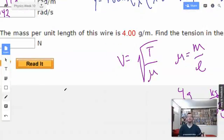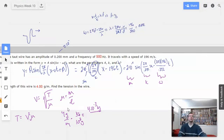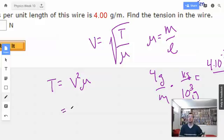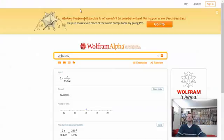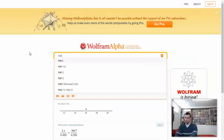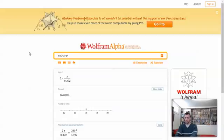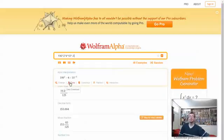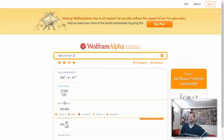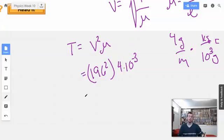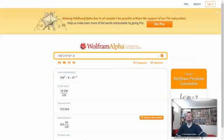Solving for tension, tension equals velocity squared times mu. So square both sides, multiply by mu. Velocity is 196. 196 squared times 4 times 10 to the negative third, and that gives us 153.7 newtons. And that's just a formula you should probably memorize.